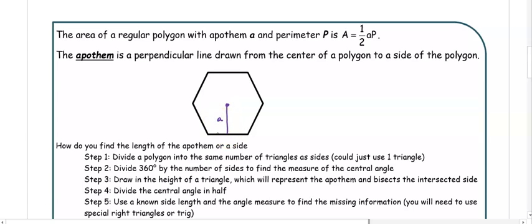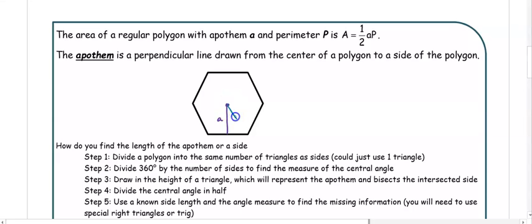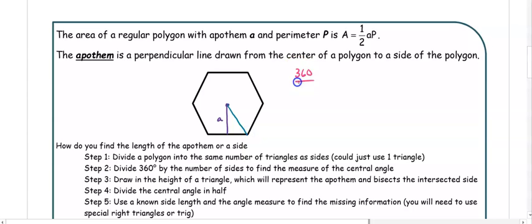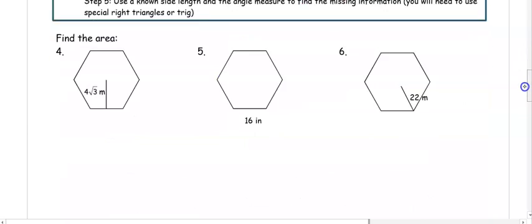In a hexagon, when we draw in the radius, we create half of a triangle. To find the angle, we take the central angle and divide by two because we're looking at half the triangle, giving us 30 degrees. So in a hexagon, the angle is always 30 degrees, and we can use special right triangles to find the information we need.